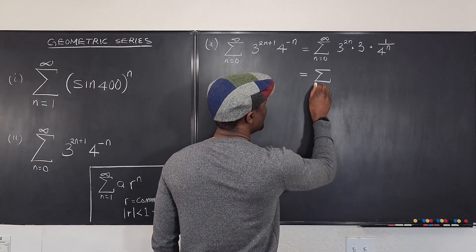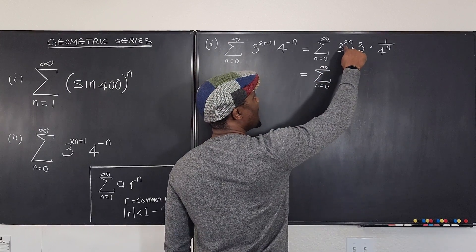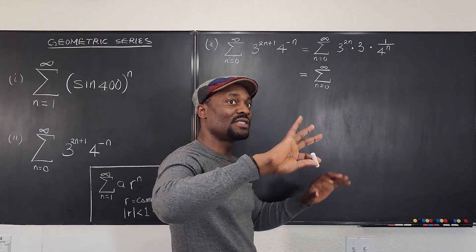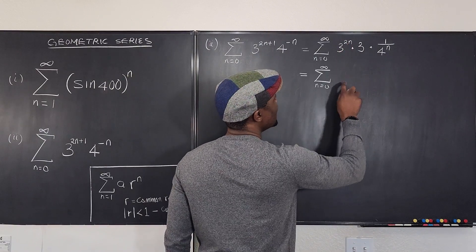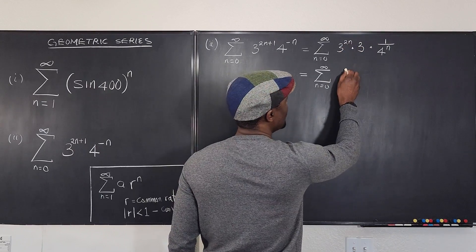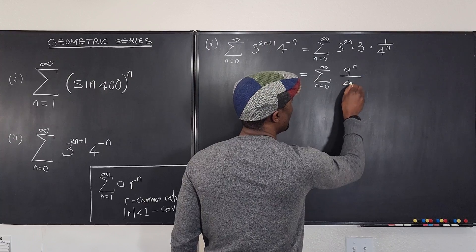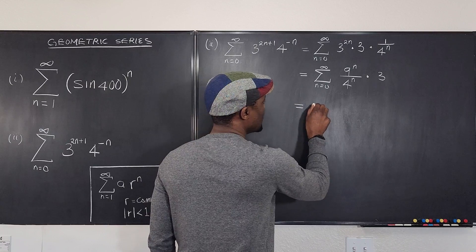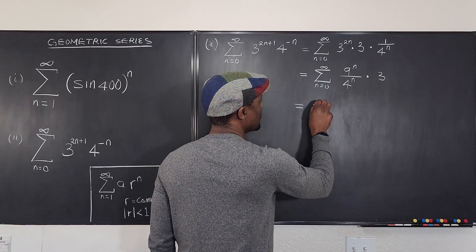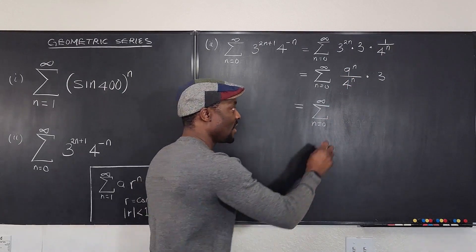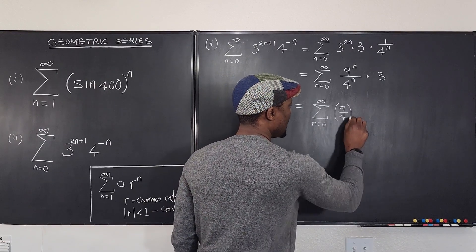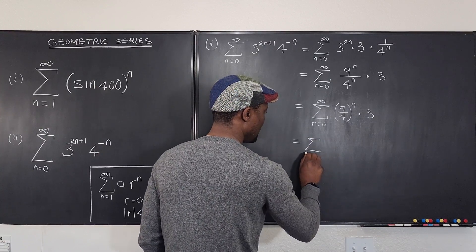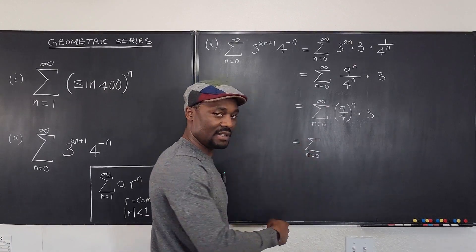Combining everything that has n: three to the two n is the same thing as three squared raised to power n, which is nine raised to power n. So I can write nine raised to power n over four raised to power n. By laws of exponents, that combines to nine over four raised to power n, all times three. I already know this diverges.